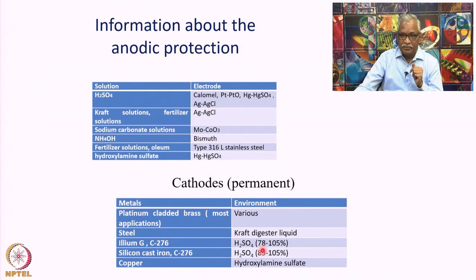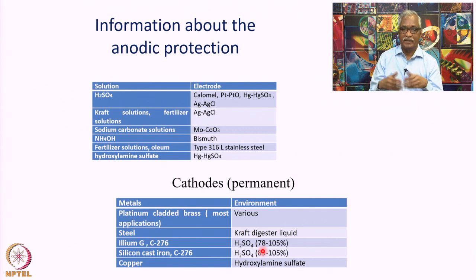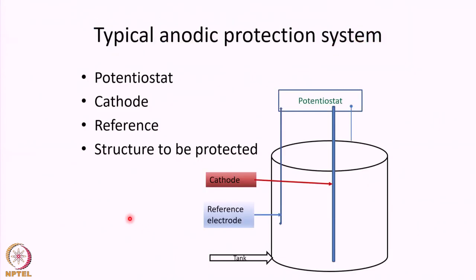There are different types of cathodes available. As opposed to cathodic protection where anodes disintegrate over time, cathodes in anodic protection — because a cathodic current is applied — are very stable. A range of cathodes from platinum down to copper are used for various applications. A typical anodic protection system consists of a potentiostat connected to a cathode and a reference electrode, providing internal protection of the tanks.